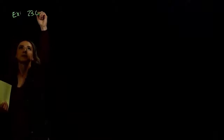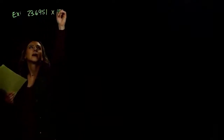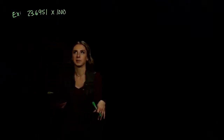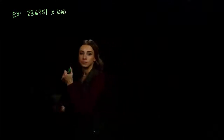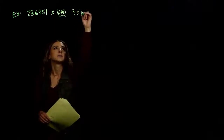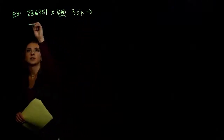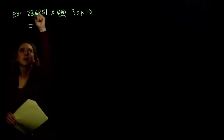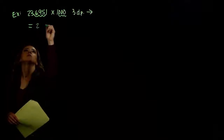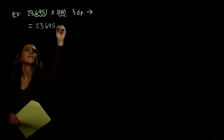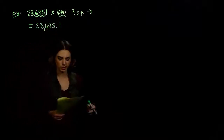Now we should be able to quickly compute whenever we're multiplying by a factor or multiple of 10. For example, what is 23.6951 times 1,000? We're going to take our decimal point and move it three places to the right — because we're making a larger number — since there are three zeros in 1,000. Moving three to the right gives us 23,695.1. Throw in a comma so it's easier to read.